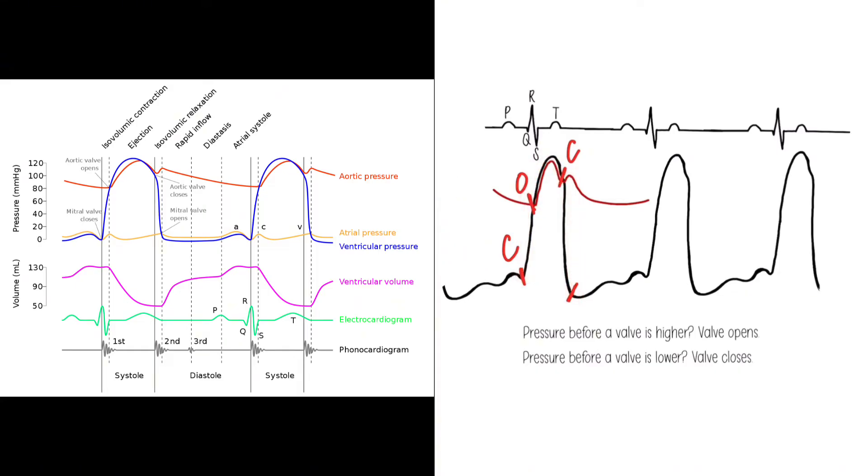So now a big part of hemodynamics is the pressure, volume, and valve relationship. So when the pressure before a valve is higher, the pressure before it exceeds the chamber after it, that valve will open. Then when the pressure before a valve is lower, that valve will close after this phase is done. So let's see what that looks like here.